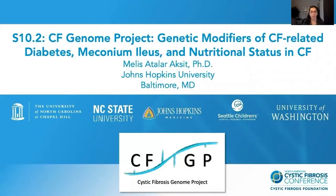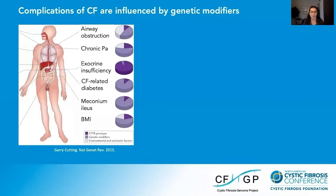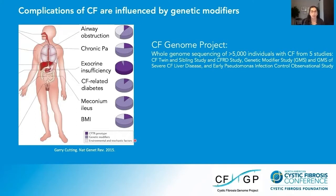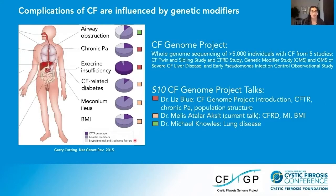Thank you to the organizers for inviting me to speak as part of this exciting symposium. Today I'll be talking about some of our results from the CF Genome Project on CF-related diabetes, meconium ileus, and nutritional status in CF. Twin and sibling studies have shown that each complication in individuals with CF is influenced by CFTR genotype — the amount of residual function the CFTR protein has — genetic modifiers, or genetic variants outside of CFTR, and environmental and stochastic factors. I'm the second of three speakers talking about work from the CF Genome Project within this session.